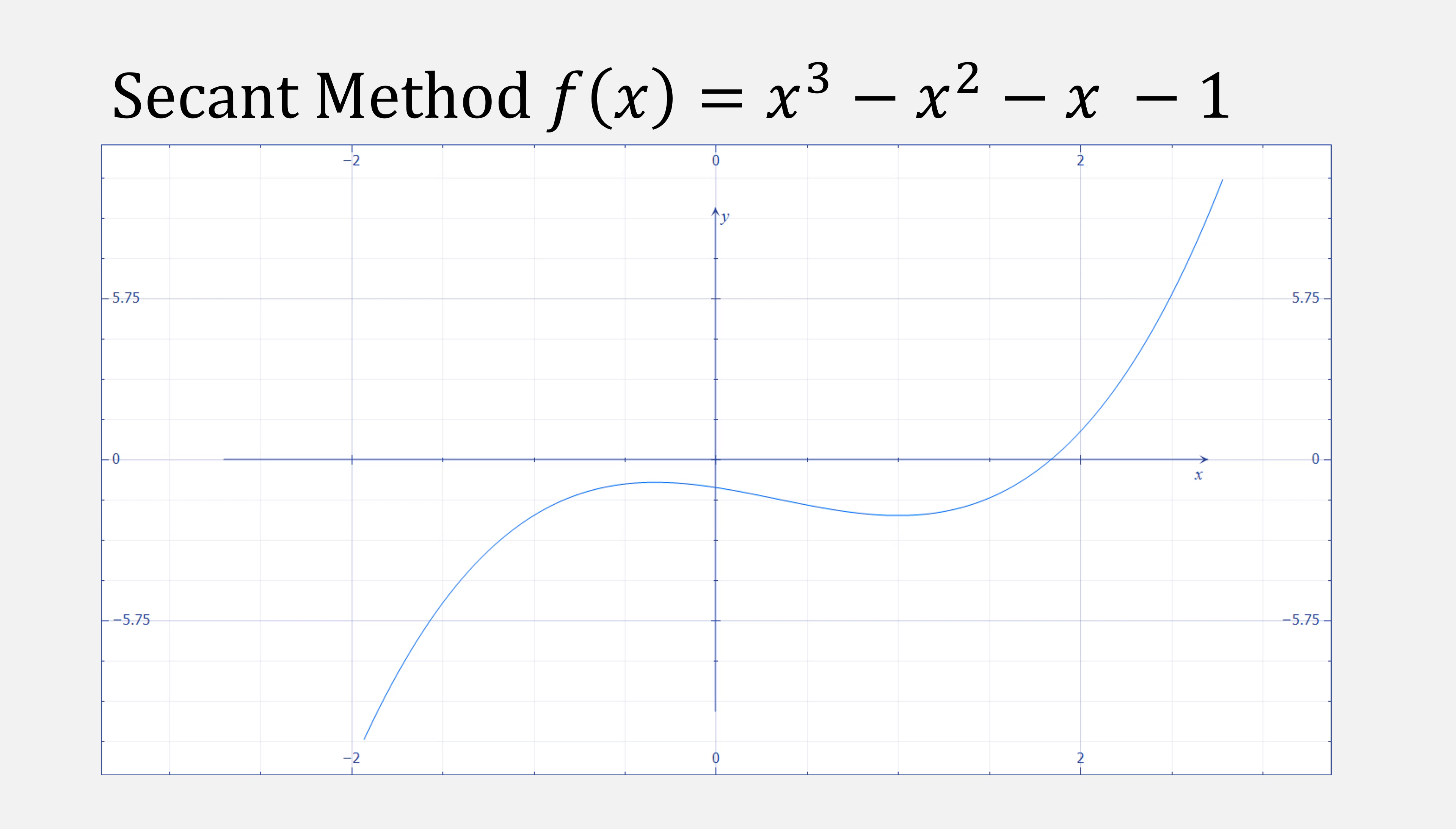First let's review secant method. If we start with two points, we draw the secant between them. Where it intersects the x-axis is our new point x3. Now we'll use our last two points x2 and x3 to draw another secant. This one also intersects the x-axis at x4.